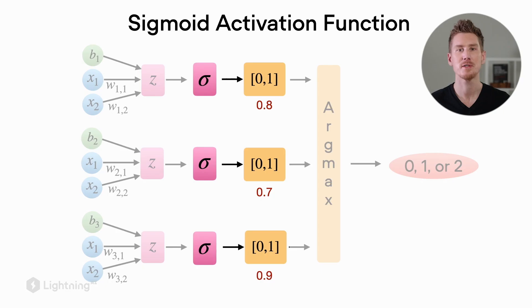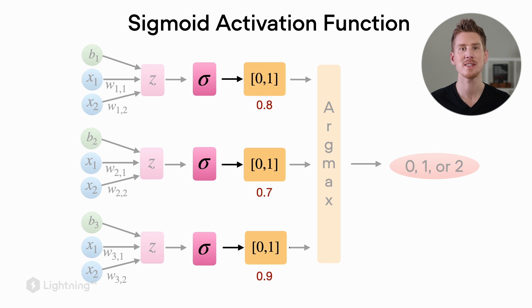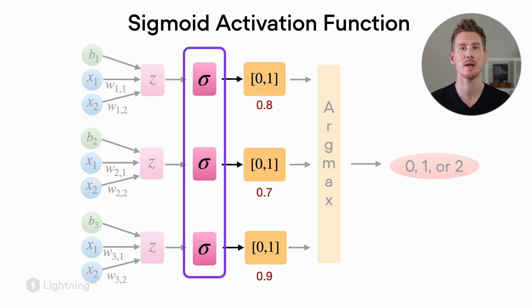Assume that we don't use the Softmax activation function and are just using the regular sigmoid activation function. For each set of weights, we have the sigmoid activation function.